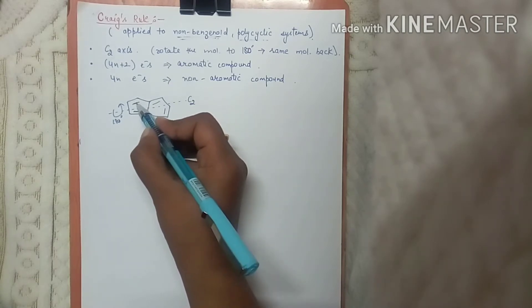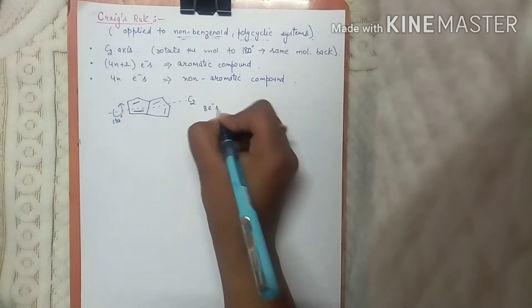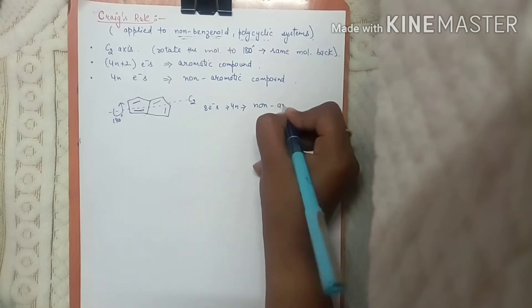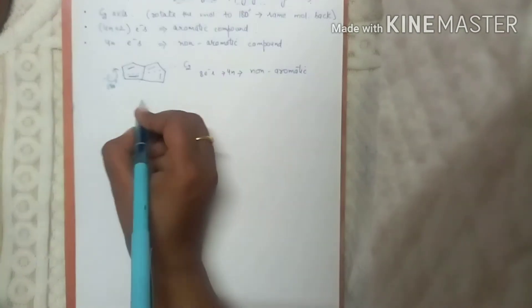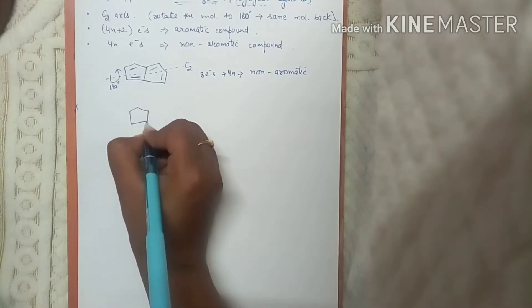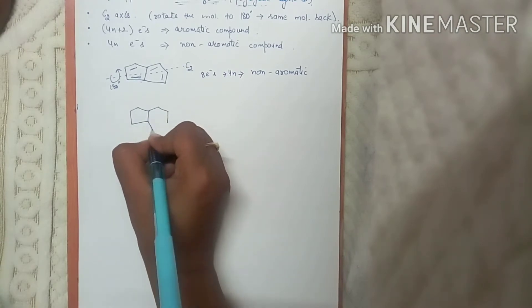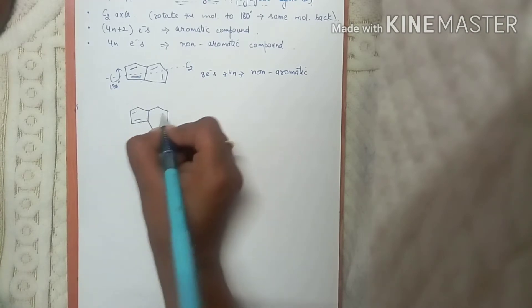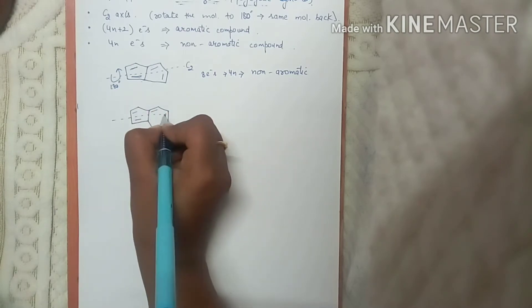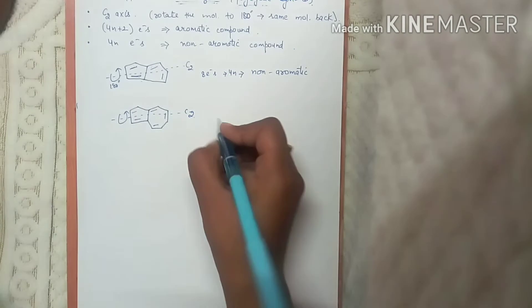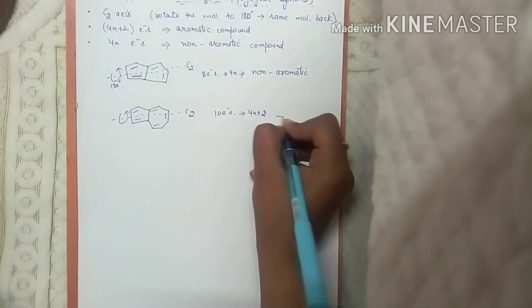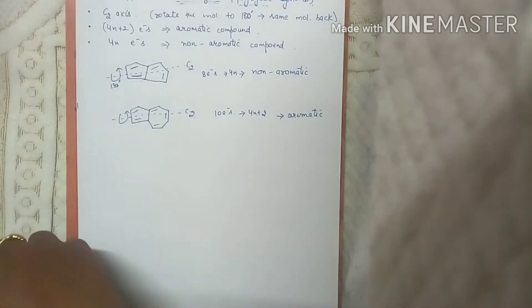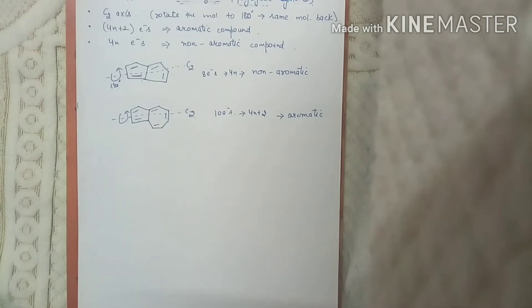We count the number of electrons: two, four, six, eight — eight electrons. That means a 4n system, so the compound is non-aromatic. For a five and seven membered ring system, this will also have a C2 axis. Counting the electrons: two, four, six, eight, ten — ten electrons, following the 4n+2 rule, so the compound is aromatic in nature.